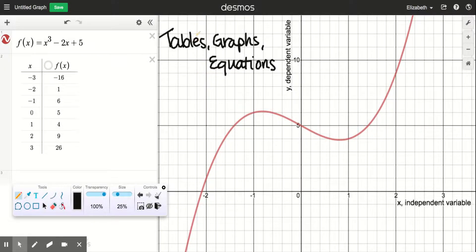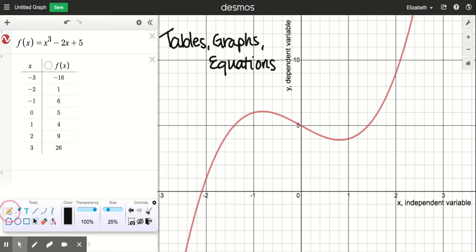Okay, in this video, we're going to talk about how tables, graphs, and equations are three different ways of displaying the exact same information. So when you are looking here, let's start with an equation: x³ - 2x - 5.